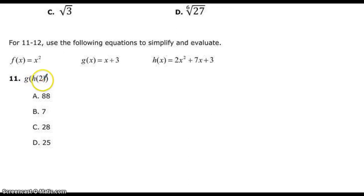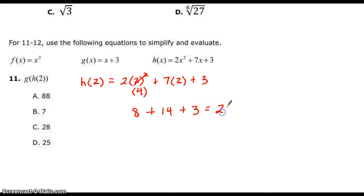g of h of 2, so start on the inside, work your way out, so do h of 2 first. So that's 2, we're plugging in 2 for x in the h function. 2 times 2 squared, plus 7 times 2, plus 3. 2 squared is 4, 2 times 4 is 8, 7 times 2 is 14, 8 plus 14 is 22, plus 3 is 25. But we have to do g of that, so we're now going to do g of 25. 25, 25 plus 3 is 28.